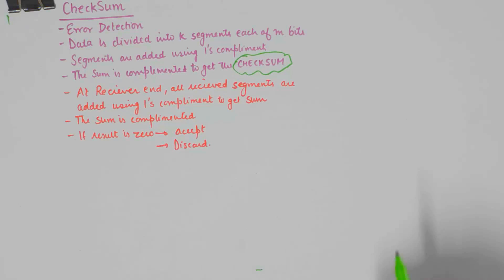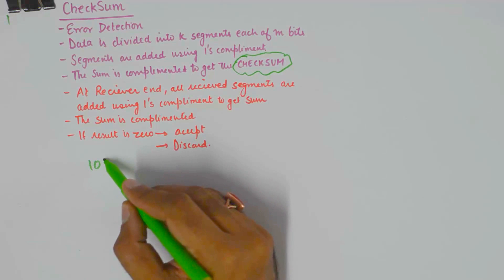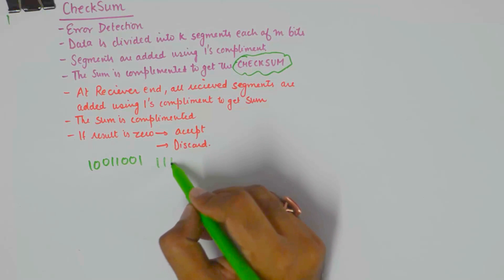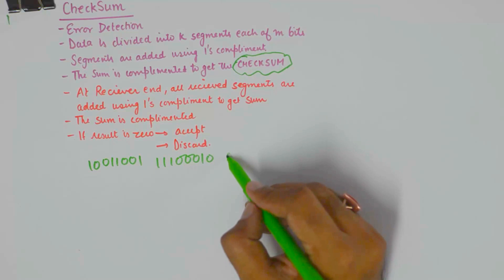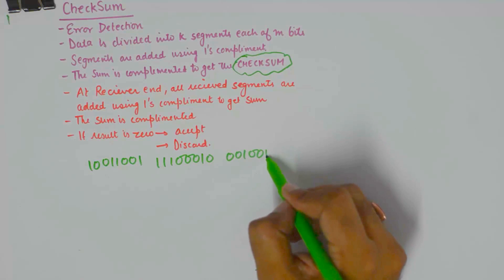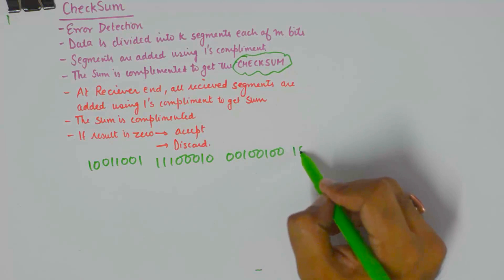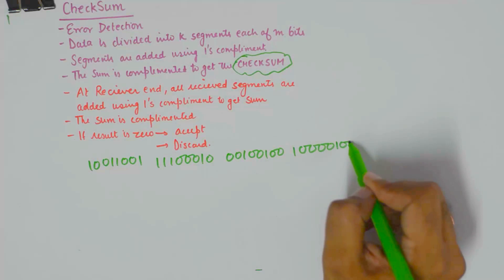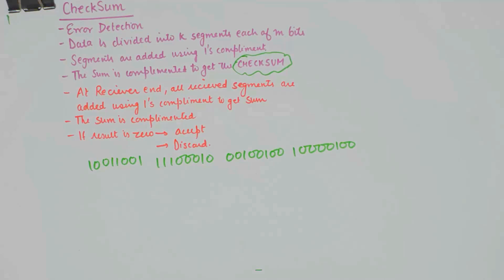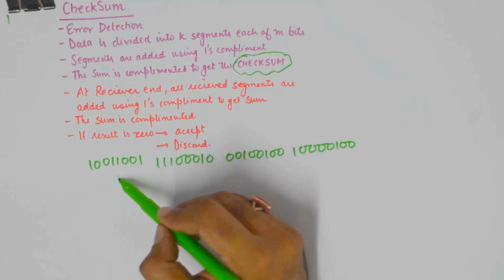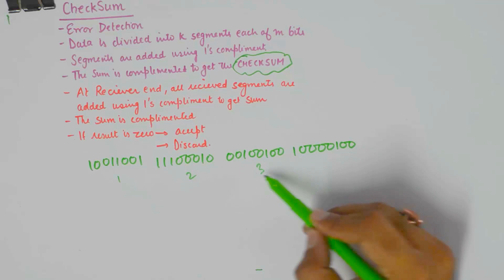For example, I will write down 4 bytes of data, the original data that we wish to transfer. Let us say we wish to transfer these 4 bytes and this is byte number 1, 2, 3 and 4.